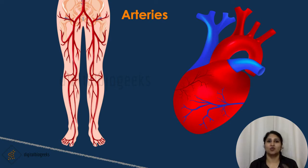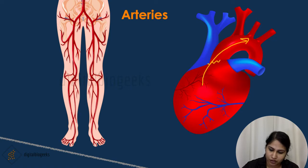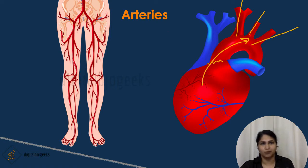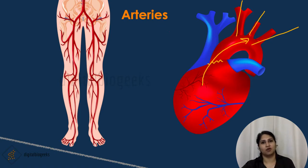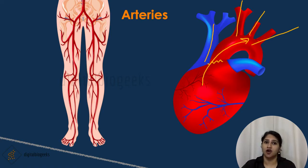Arteries are thick-walled vessels that carry oxygenated blood from the heart to the rest of the body. Oxygenated blood enters the aorta through the aortic valve from the left ventricle, and the aorta branches out into smaller branches known as arterioles and capillaries. The largest artery in the body is the aorta; its walls are elastic and help to maintain blood pressure throughout the body. There is one artery that carries deoxygenated blood — the pulmonary artery — which carries deoxygenated blood from the heart to the lungs to get it oxygenated.